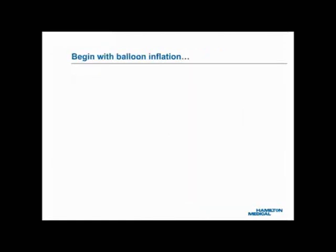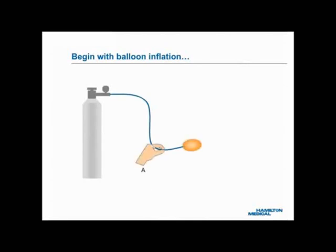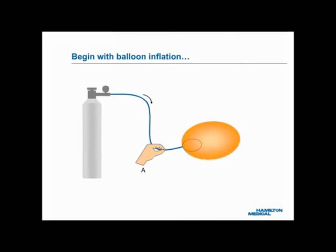The primary function of a ventilator system is to intermittently generate a positive PAO. Let's begin with a simple balloon inflation system. As shown here, the system has four parts: a full gas cylinder with valve; a connecting tube, in blue; a balloon; and Hand A to control the flow of passing gas. When the cylinder valve opens, the huge pressure gradient forces the gas to move into the balloon. However, by pinching the tube between finger and thumb, it's easy to control whether or how fast the balloon is inflated.